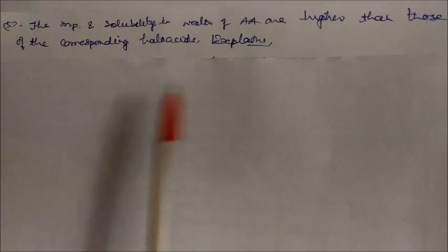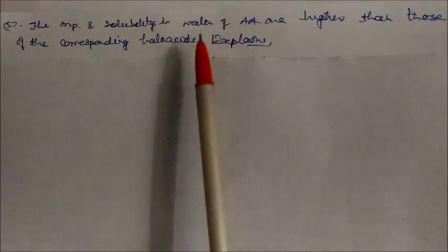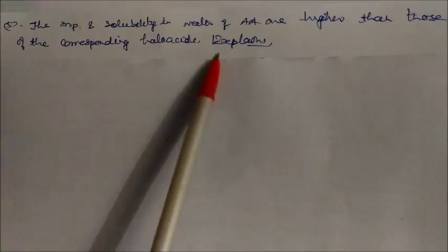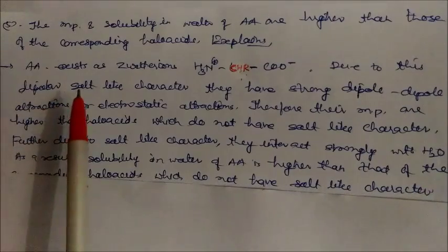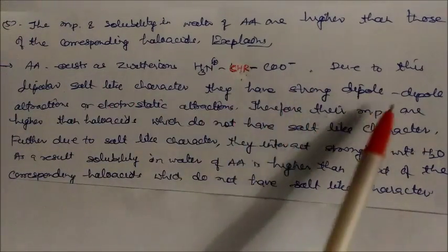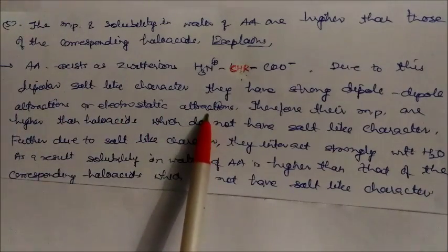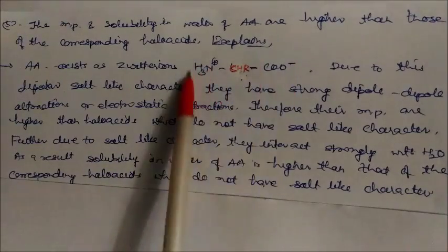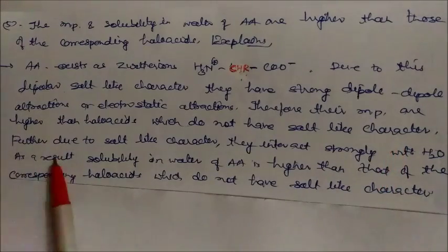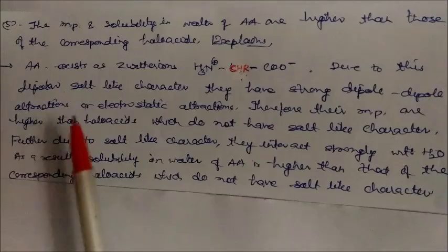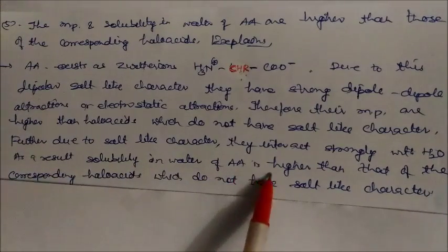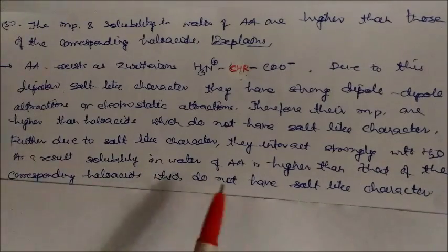The melting point and solubility in water of amino acids are higher than those of corresponding halo acids — why? Amino acids exist as zwitterions, which are dipolar ions (±). Due to this salt-like character, they have strong dipole-dipole attractions and electrostatic interactions. Therefore their melting points are higher than halo acids, which lack salt-like character. Additionally, due to this salt-like character, amino acids interact strongly with water, giving higher water solubility than halo acids.